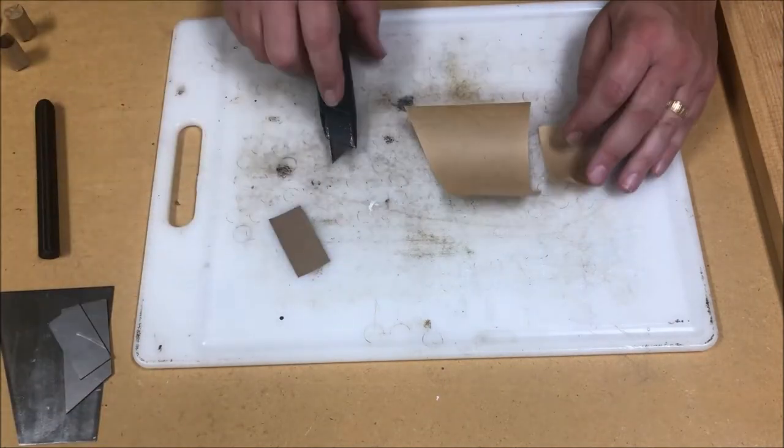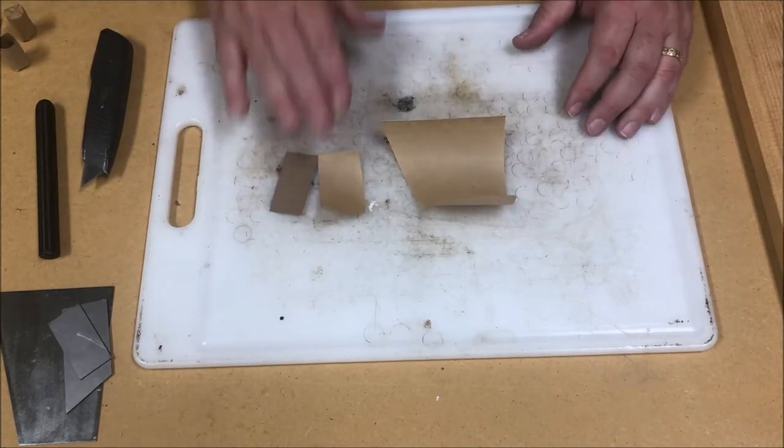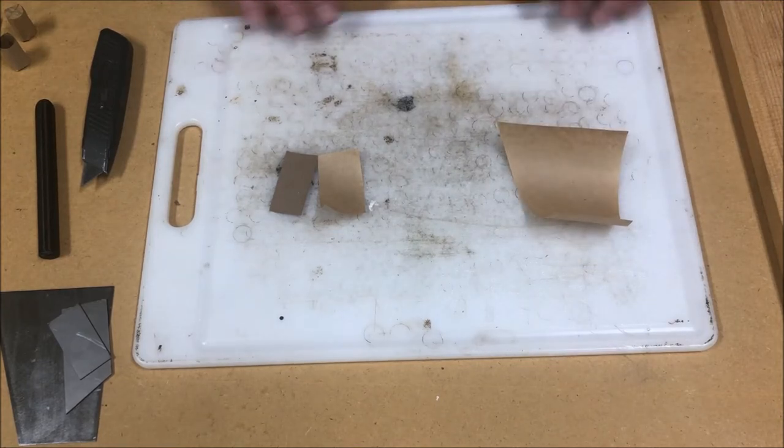So these are the three pieces of paper that make up the cartridge. These two pieces make up the powder chamber, and this is the outer wrapper.